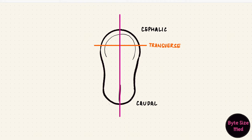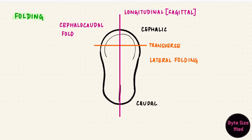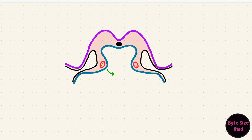A section going this way would be a longitudinal or sagittal section. The embryo folds during its development in two directions: laterally and cephalocaudally. Lateral folding is the sides coming together, closing the ventral body wall. Cephalocaudal folding is the bending of the head and tail ends. To see lateral folding we use transverse sections, and when the embryo folds, the two heart tubes come together and unite to form one heart tube in the pericardial cavity.